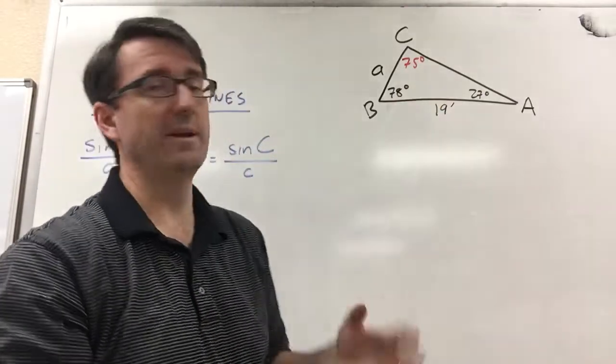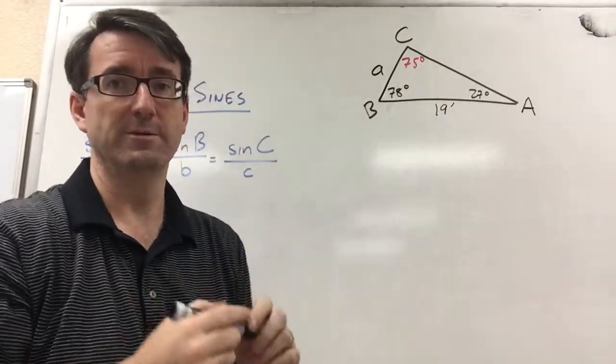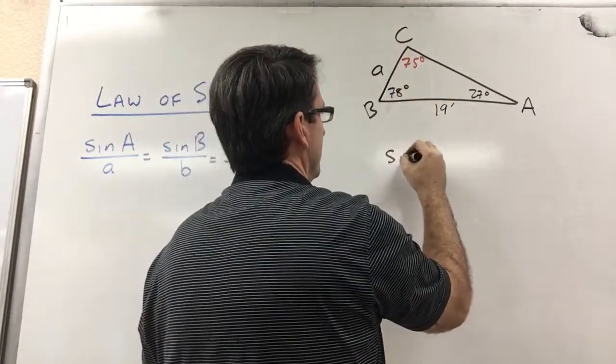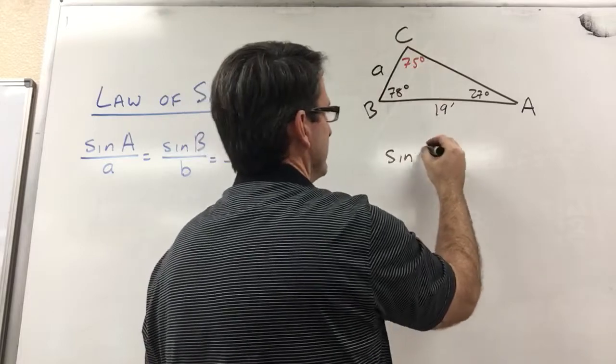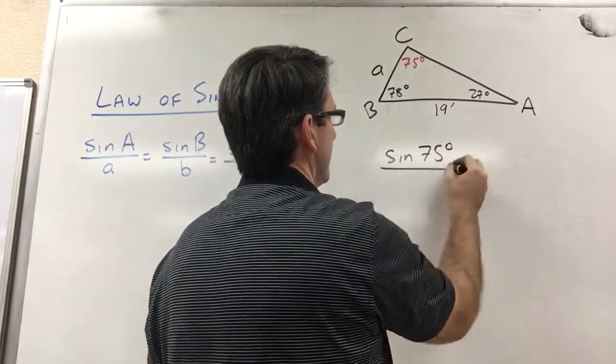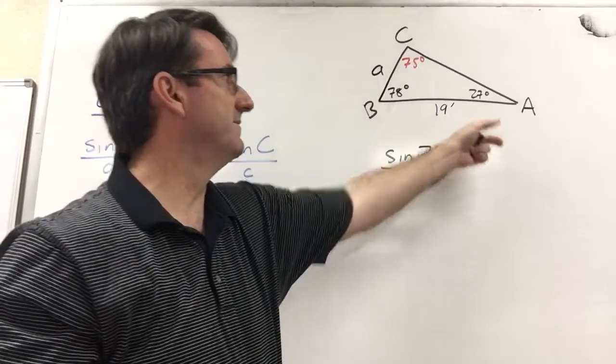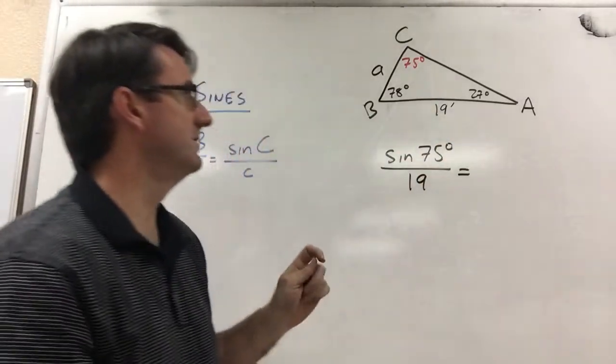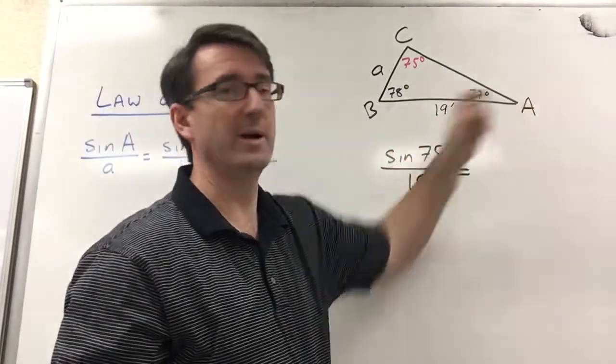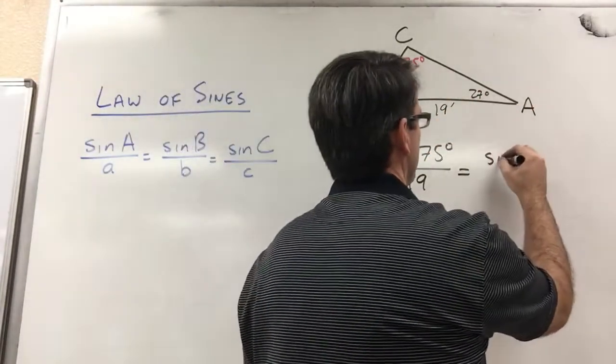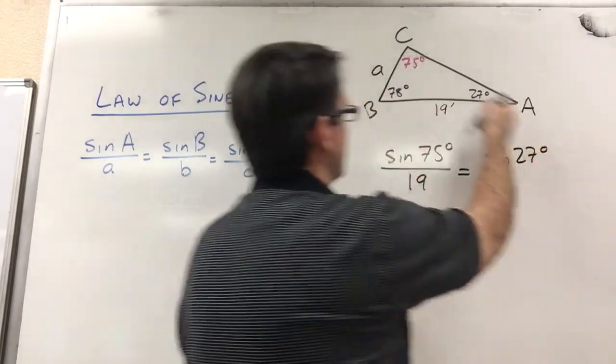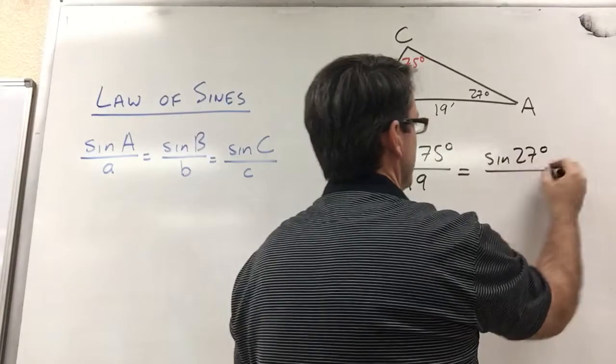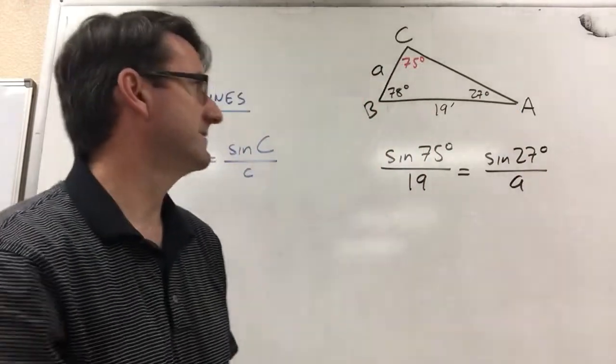And now we know all the information that we need to know in order to use the law of sines. So the sine of 75 degrees divided by the length of the opposite side, 19, is going to be equal to the sine of any other angle. So here we want angle A, because it's directly across from what we're trying to find, the sine of 27 divided by side A, the length of side A.